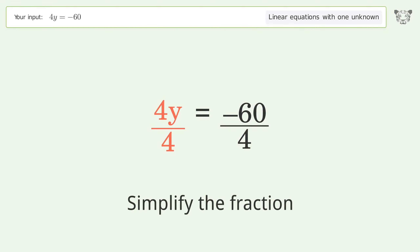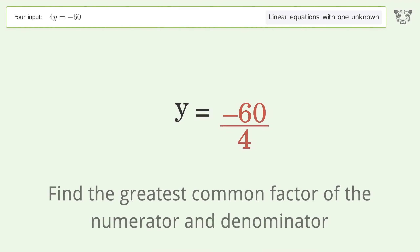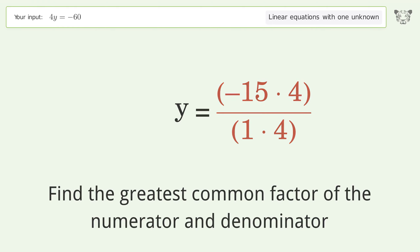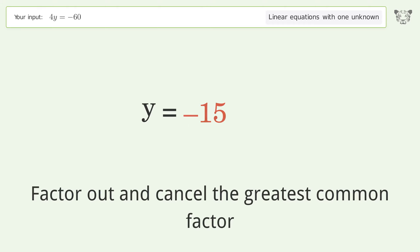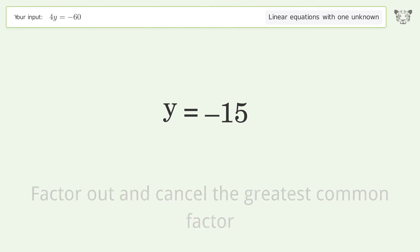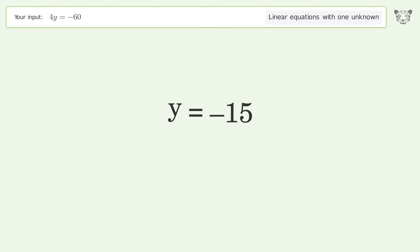Simplify the fraction. Find the greatest common factor of the numerator and denominator. Factor out and cancel the greatest common factor. And so the final result is y equals negative 15.